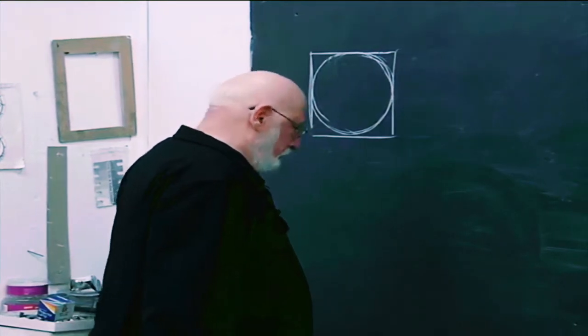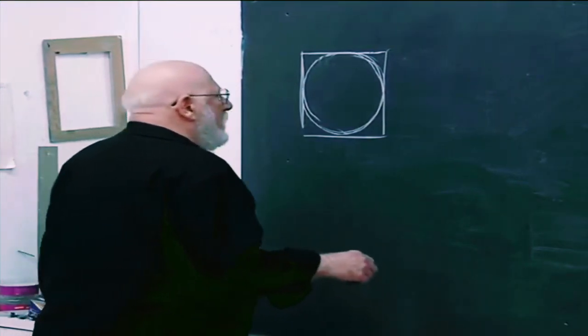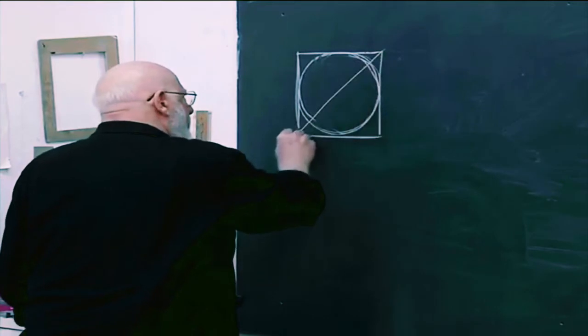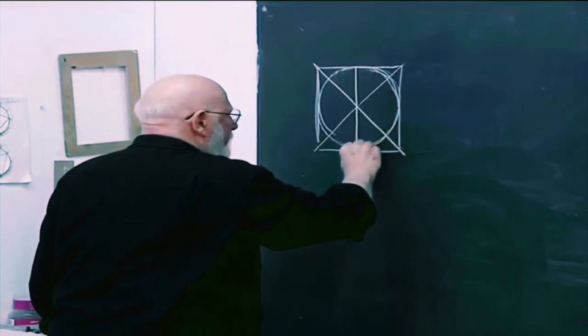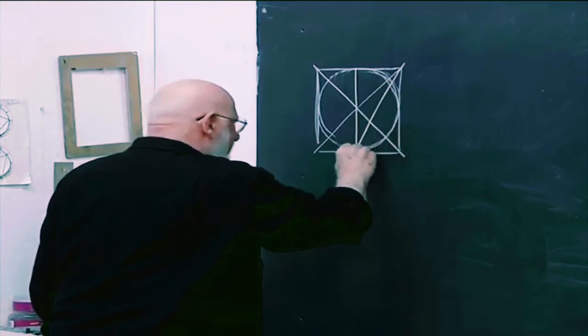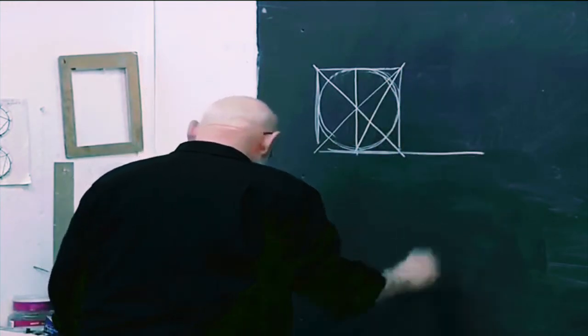If we take the square and we divide it in half, and we take the diagonal of the half.